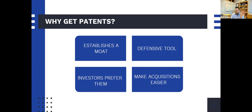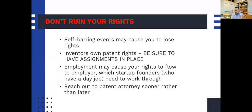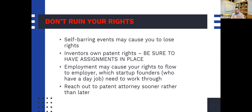Now, these next two slides are kind of out of place, but they're really the two most important slides in the entire deck. If you just ignore me for the entire hour and capture these two slides, I've accomplished something. Logically they're in the right place because I'm talking about things before you go into the patent process — things that can ruin your ability to get a patent. We want to make sure your rights aren't torched right off the bat. There are a number of things — self-barring events — meaning things you can do that actually ruin your ability to get a patent.